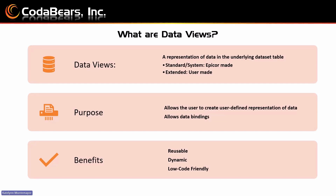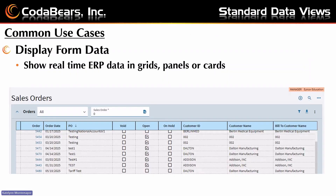The benefits are that data views are reusable — once you define a data view, they can be reused across different forms and apps for different bindings. They are dynamic, so they update in real-time as the user inputs changes or the server data is reloaded. And they are low-code friendly, which makes it simpler for the user. A common use case for standard data views is displaying form data and showing real-time ERP data in grids, panels, or cards. For example, on the sales order page, all the data — the order, order date, PO — is coming from either a BAQ or a table in the system. That's what the data view is doing: grabbing that data and displaying it.